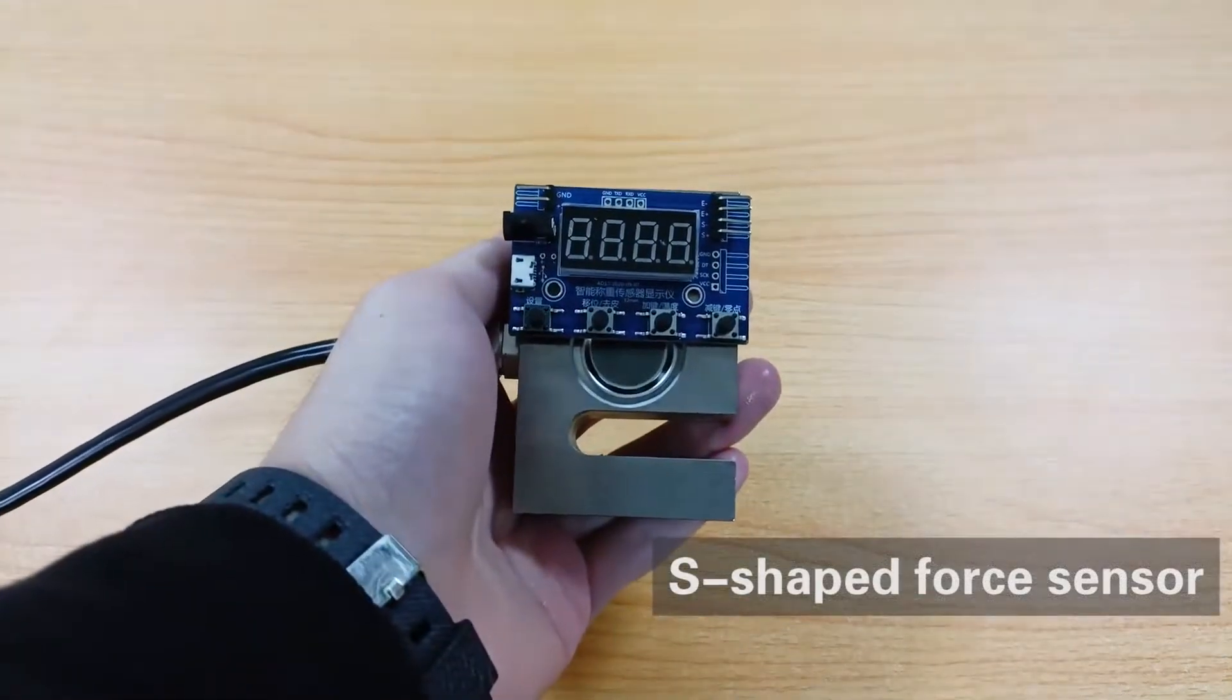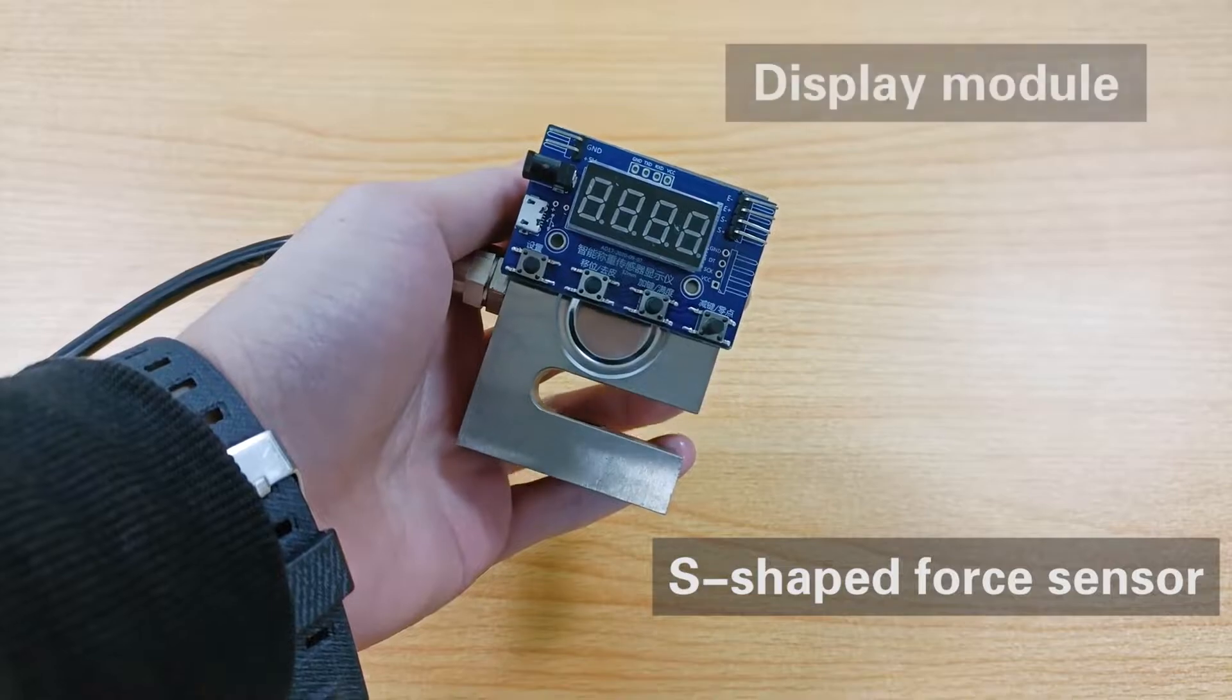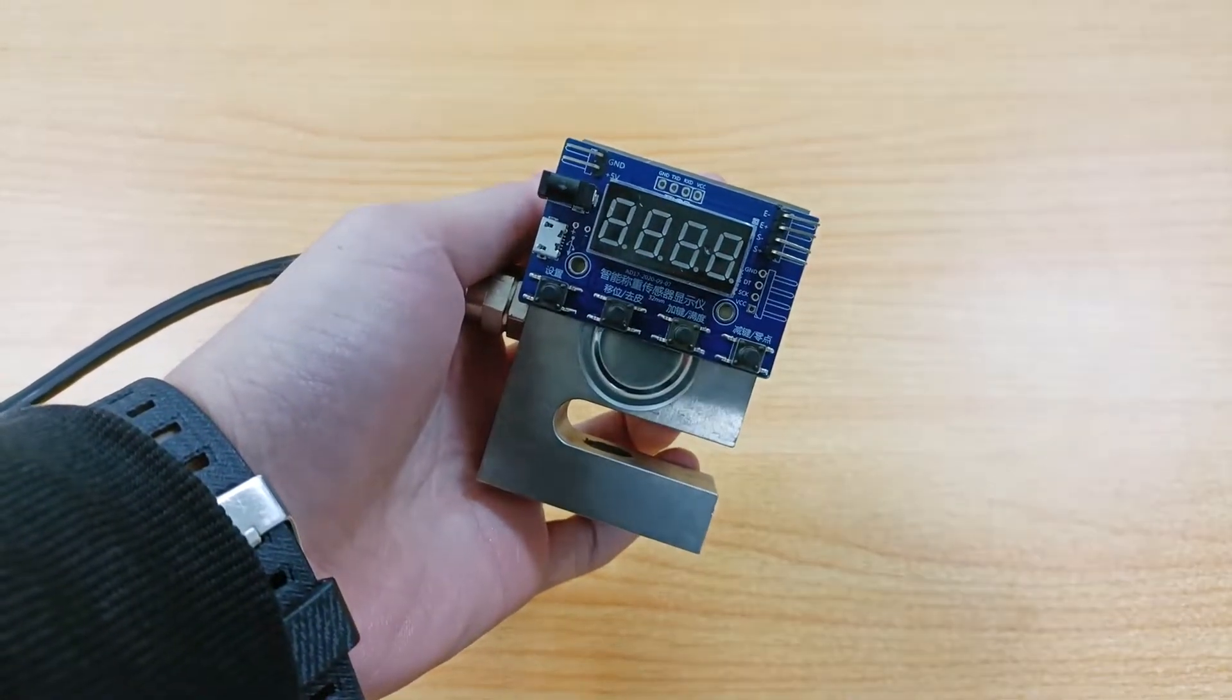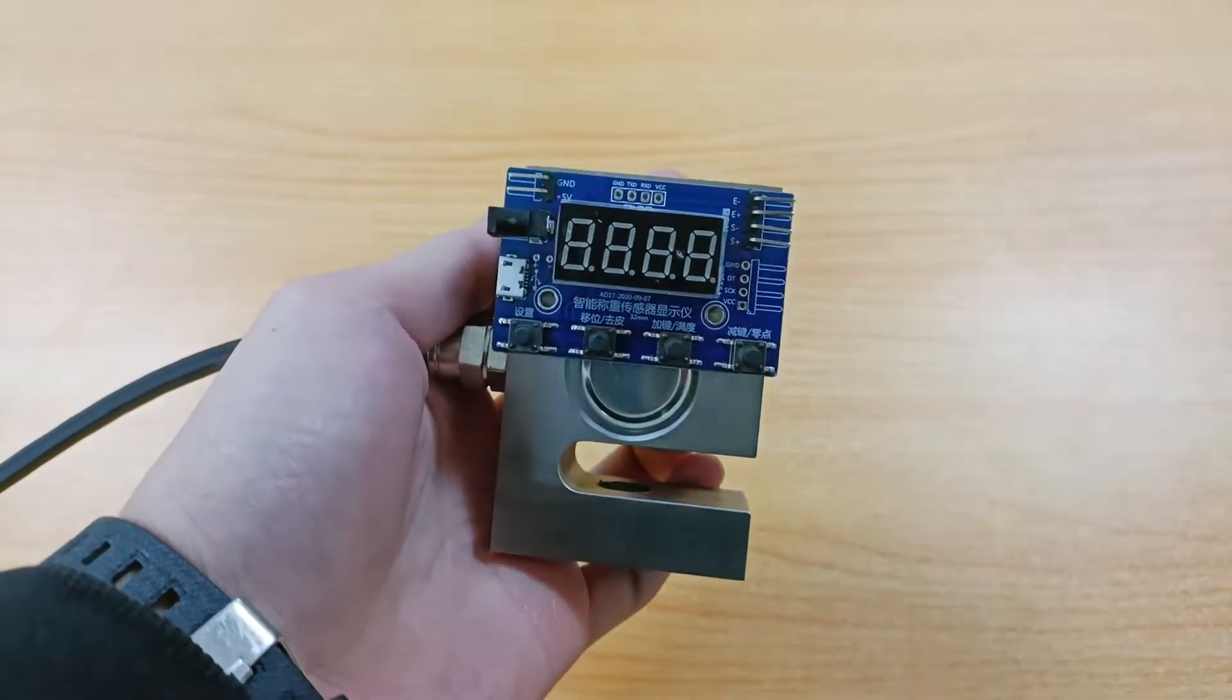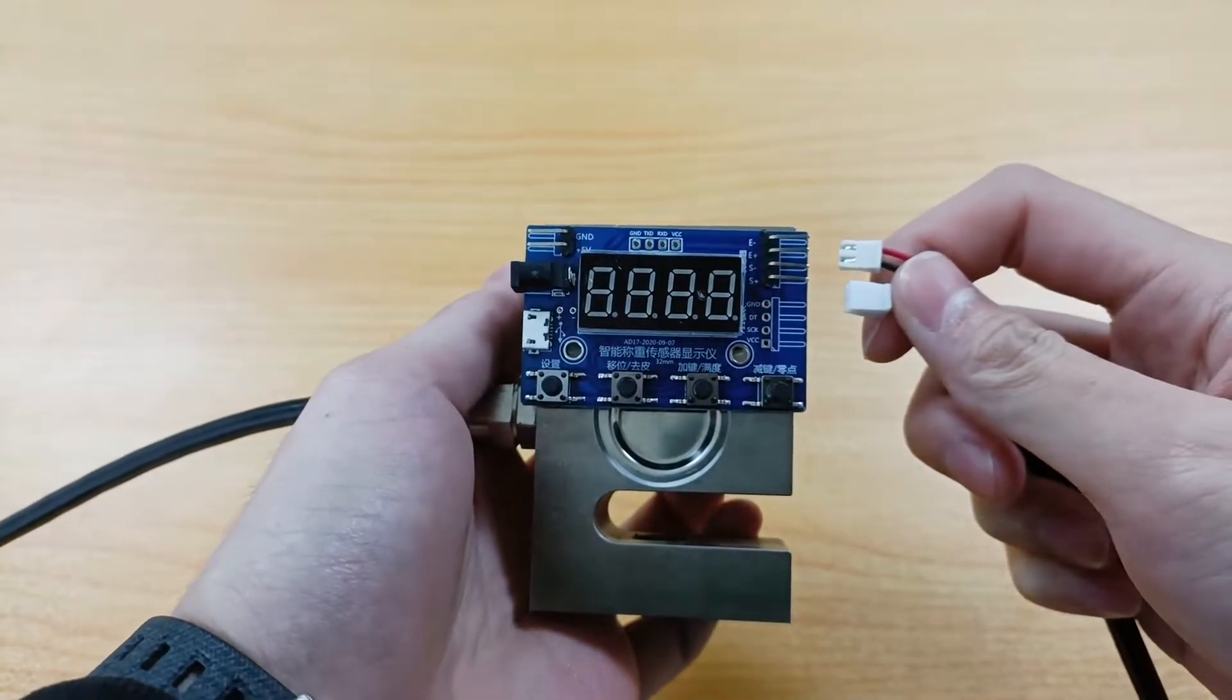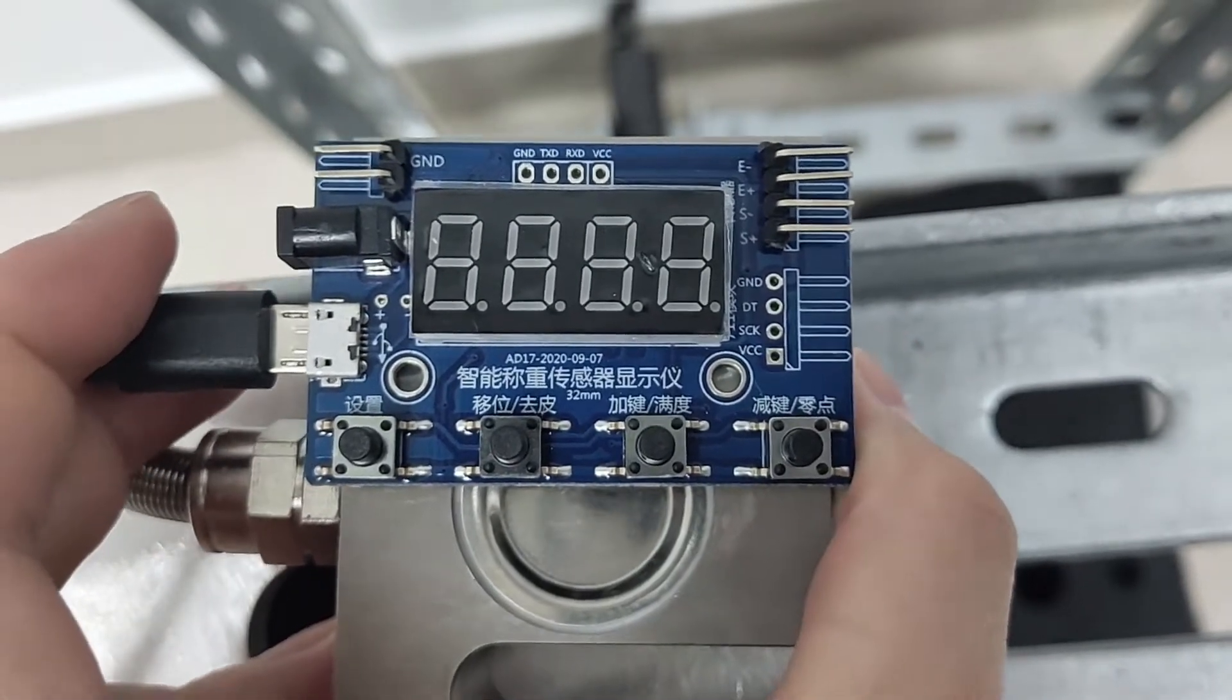We also need a force sensor and display module. This S-shaped force sensor can measure both tension and thrust, and its maximum range is 1000 kilograms. The sensor has a connection line which is directly connected to the display module.